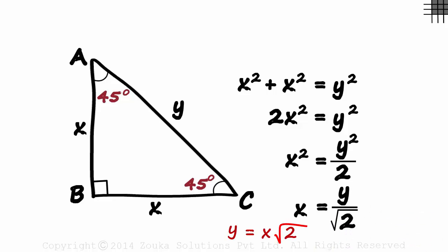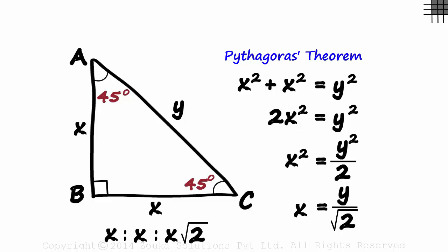Y will be x root 2. And that gives us the ratio as x is to x is to x root 2, or 1 is to 1 is to root 2. So we just applied the Pythagorean theorem in this triangle and we have the ratio we are looking for.